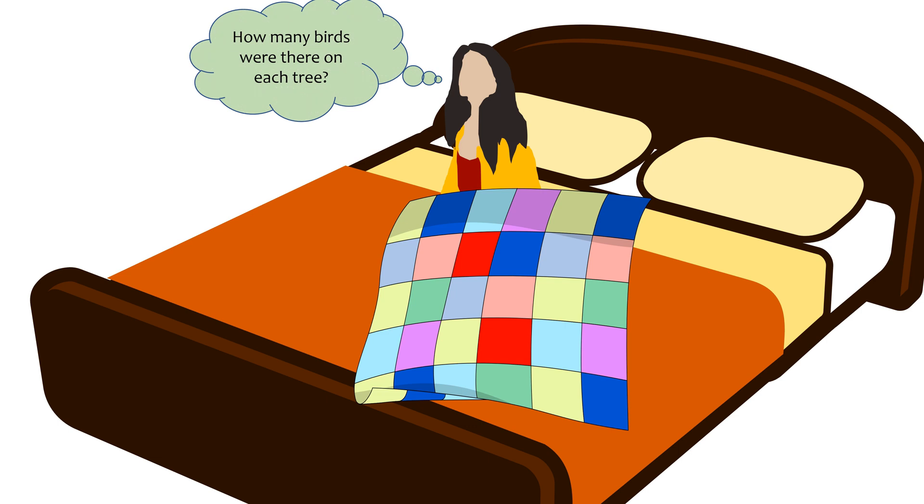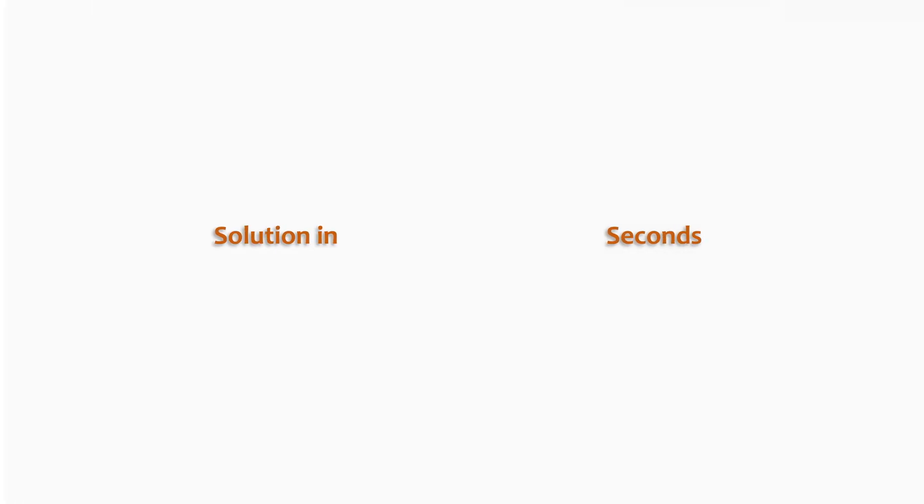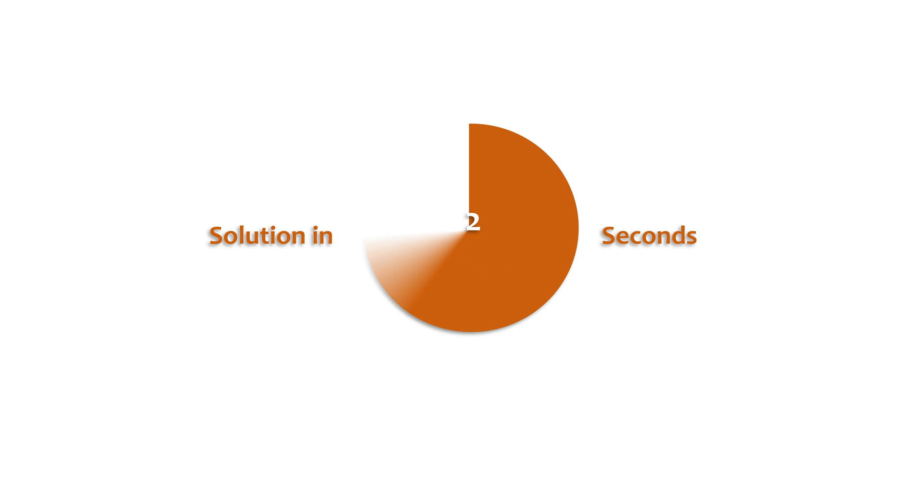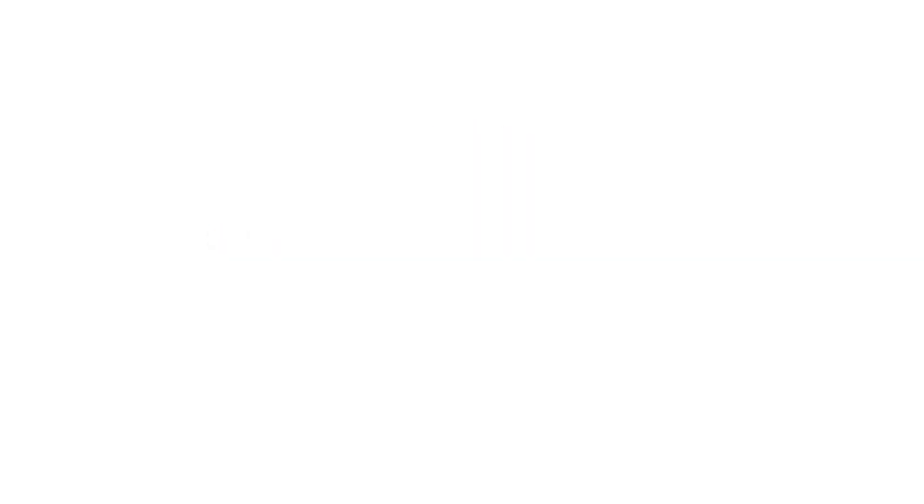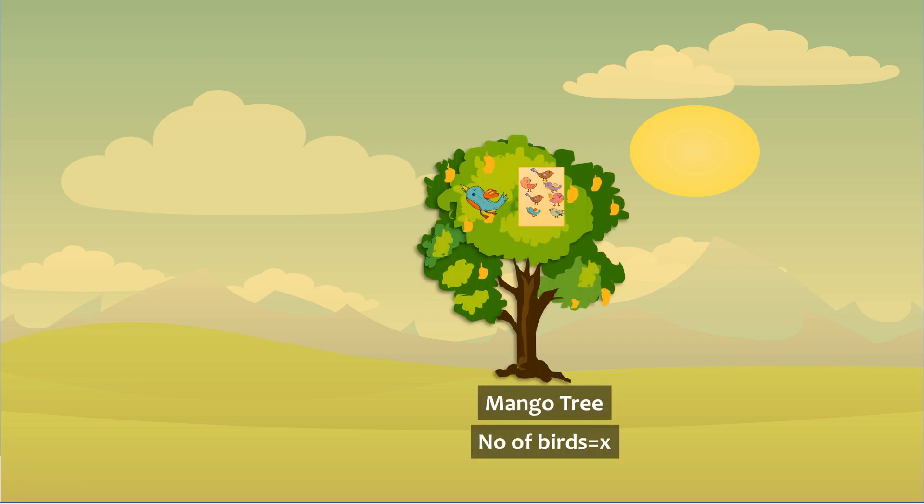So I tried and found it out. Would you like to find too? If yes, you may pause the video and solve it. I'll lead you towards solution now. So what we'll do is, we'll suppose the number of birds on the mango tree is x and that on the pine tree is y.